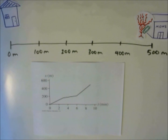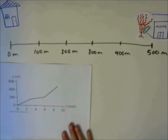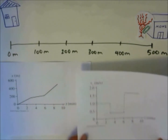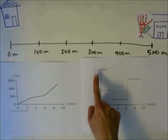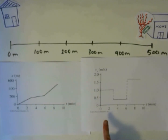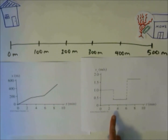There's another kind of graph that can show us the motion of an object or a person, and that's a velocity-time graph. We can take this position-time graph and put it onto a velocity-time graph. A velocity-time graph shows velocity on the y-axis and time on the x-axis. In this graph, velocity is in meters per second and time is in minutes.